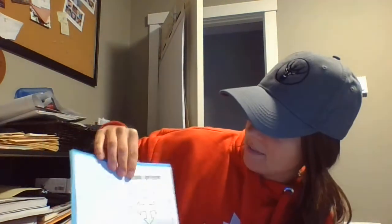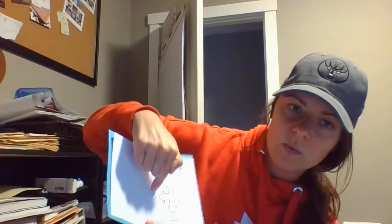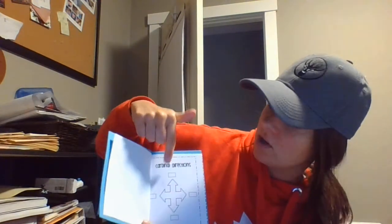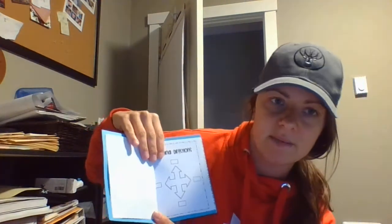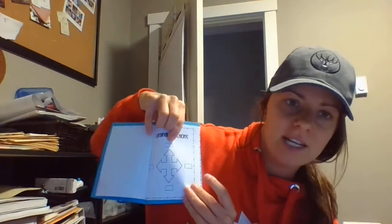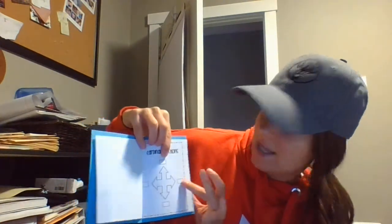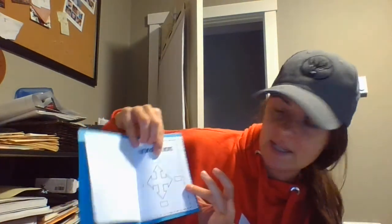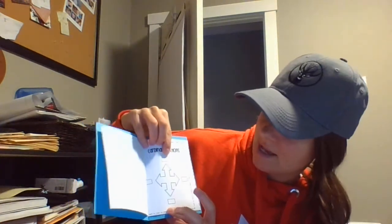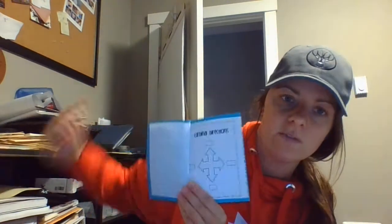Directions. I don't know if you remember this, but we talked about 'never eat sour worms' or 'never eat slimy worms,' and some of you guys made up your own sayings. So you would put an N here for north, an E for east, S for south, and a W for west.